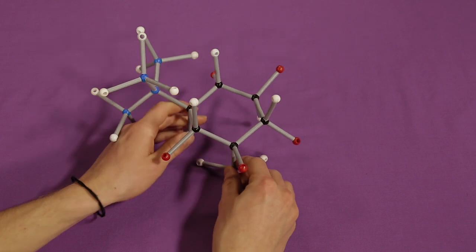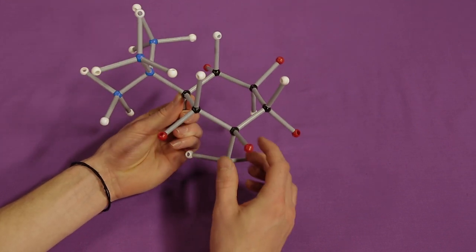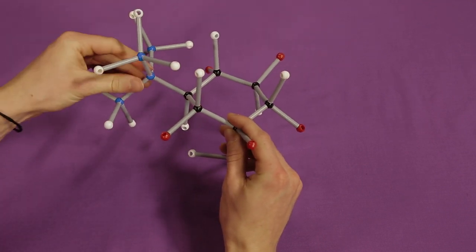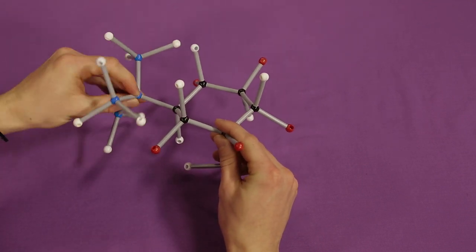Now the big, bulky tert-butyl group is in the equatorial position, further away from the other atoms. This looks more stable than the other conformation.